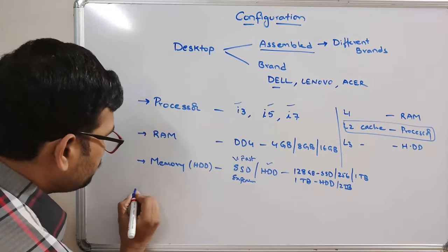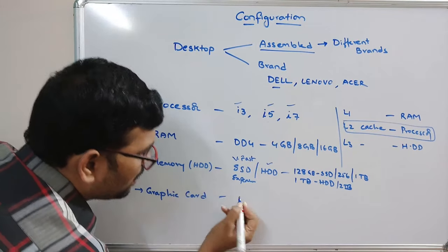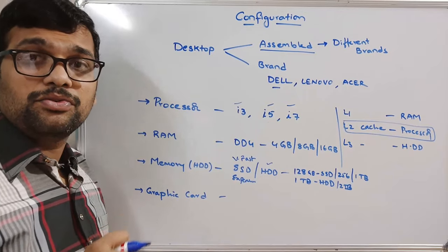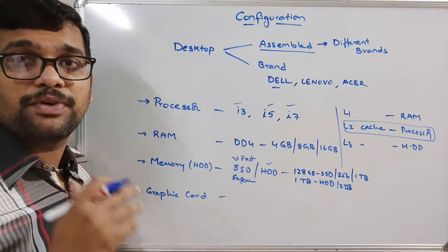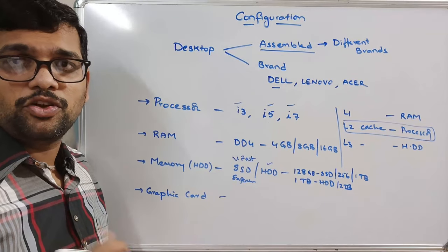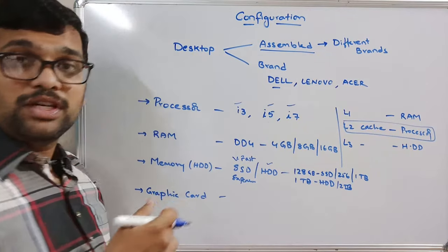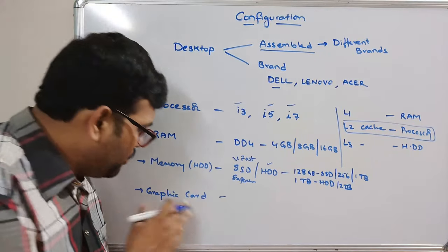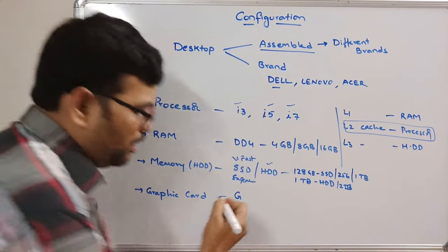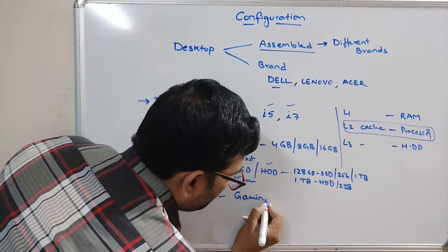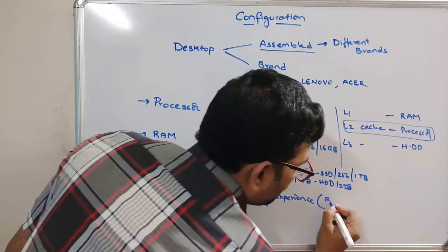The next component is the graphics card. The graphics card is used to improve the resolution of the display and is mainly used for gaming programs. If you are very interested in gaming applications, you should have a graphics card for a better gaming experience and better display quality.